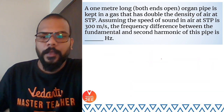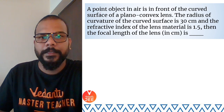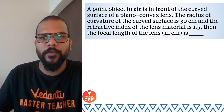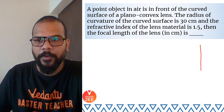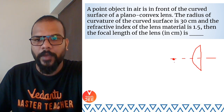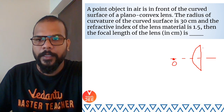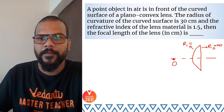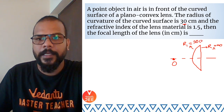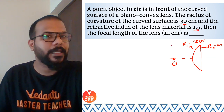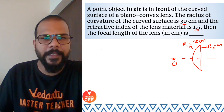The next question is from optics. A point object in air is placed in front of the curved surface of a plano-convex lens. For this lens, the radius of the flat side R2 is infinite, and R1 is given as 30 centimeters. The refractive index of the material is given as 1.5, and the question asks us to find the focal length.